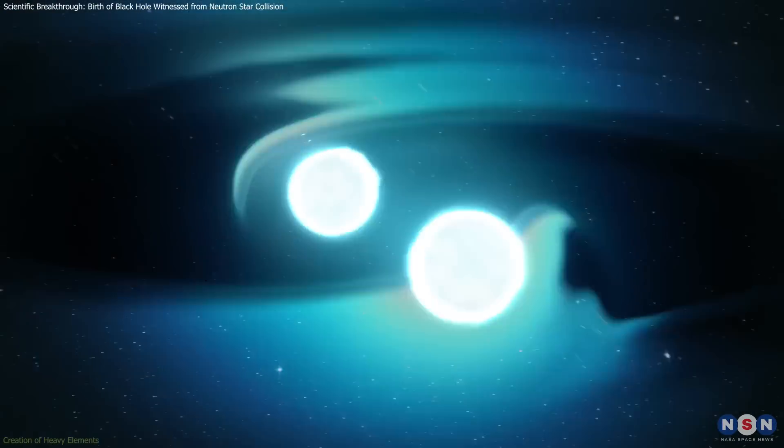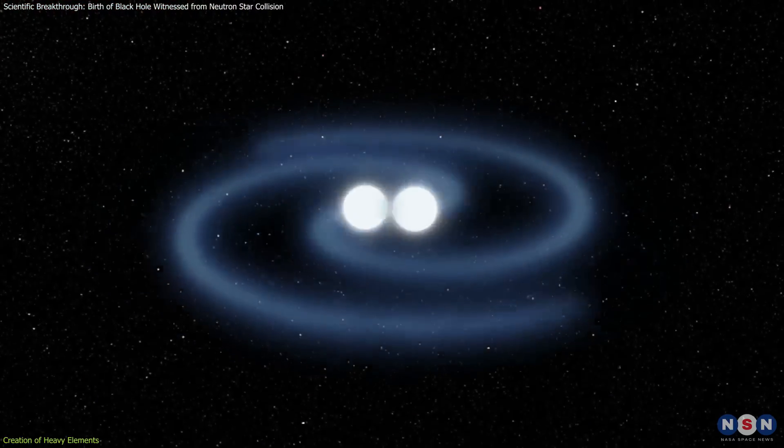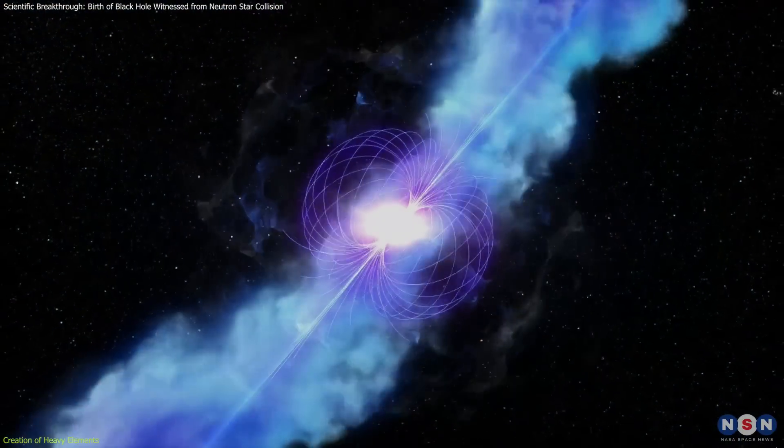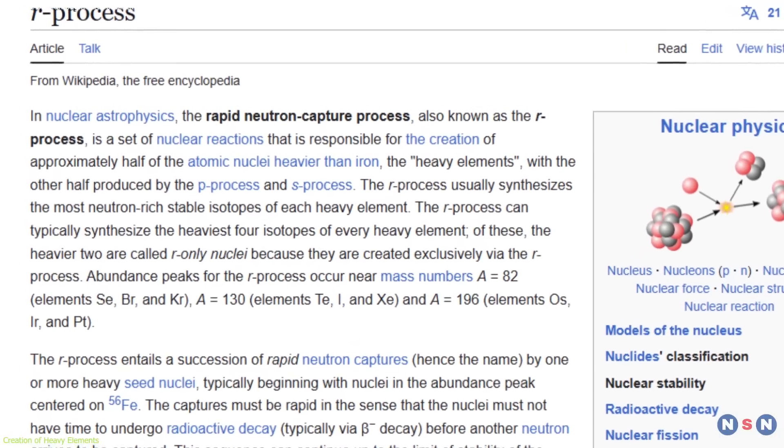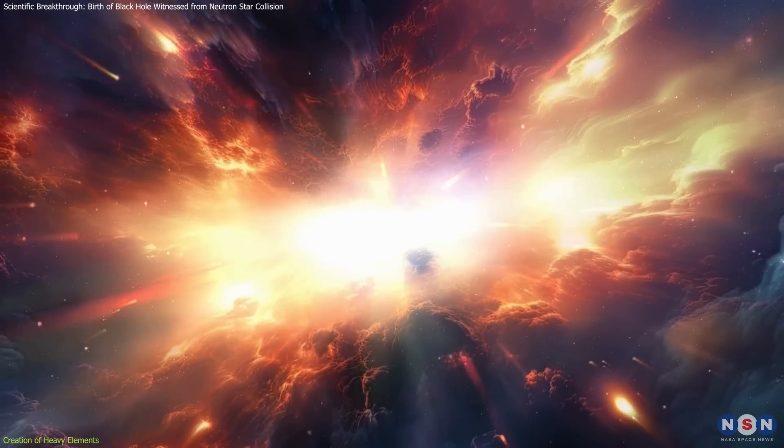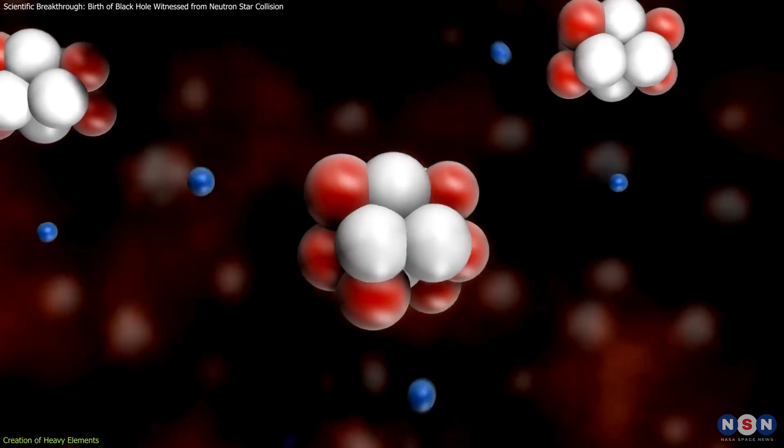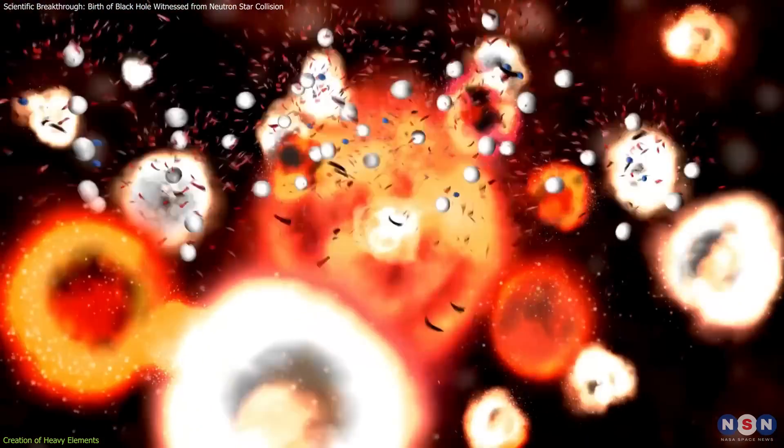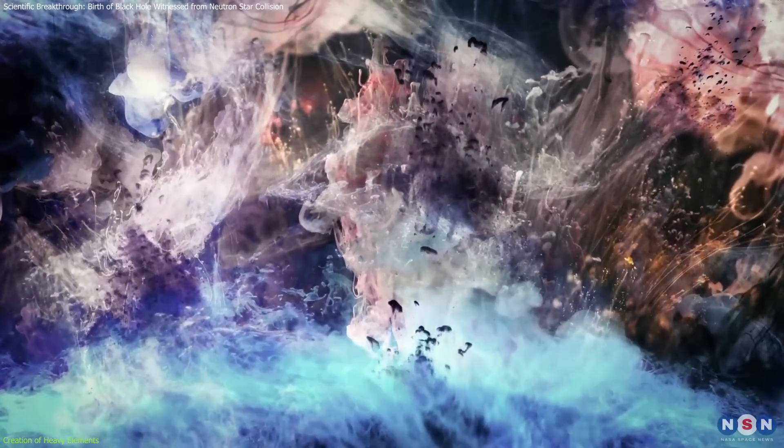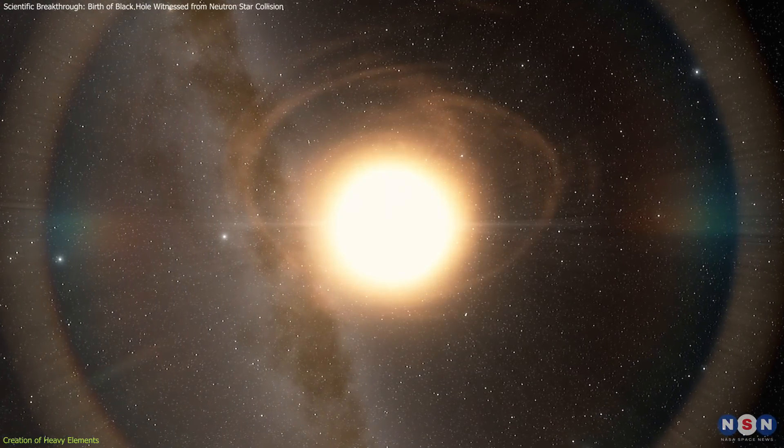What's even more exciting about this neutron star collision is what it means for the elements that make up our world. During the crash, a process called rapid neutron capture, or the R process, takes place. This is the magic behind the formation of heavy elements. When the neutron stars collide, temperatures soar to billions of degrees, similar to those just a second after the Big Bang. This intense heat, combined with a dense neutron-rich environment, allows atomic nuclei to capture free neutrons quickly. The R process creates elements that are much heavier than iron, elements we can't get from regular stars, such as gold, platinum, and uranium.